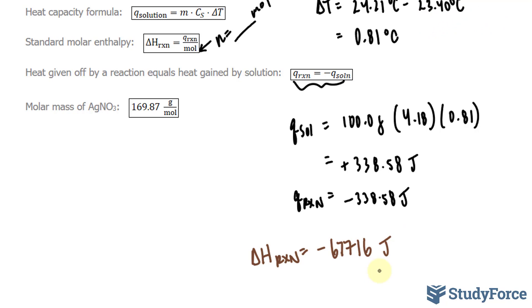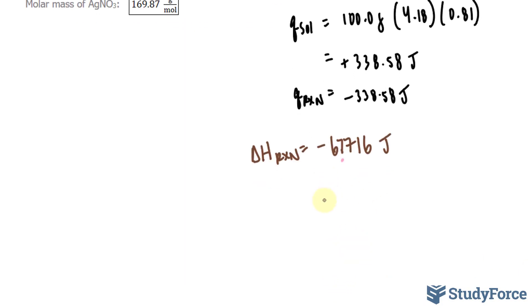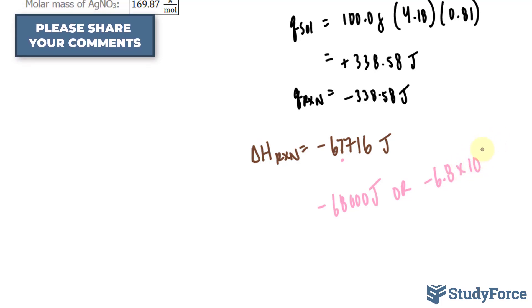We need this to two significant figures, because remember this number was two significant figures. I'll stop writing after the 7, and the number following this 7 is another 7, so we round up to negative 68,000 joules, or simply negative 6.8 times 10 to the power of 4 kilojoules.